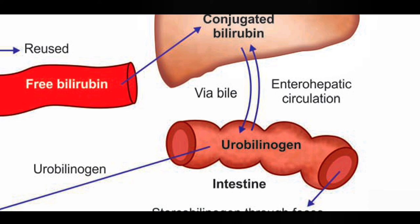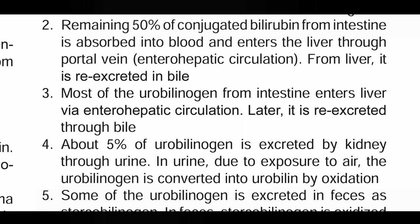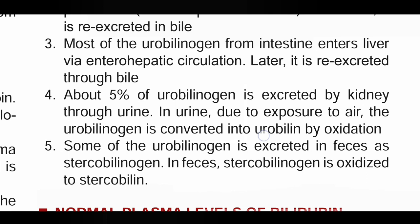The remaining 50% of conjugated bilirubin from the intestine is absorbed into the blood and enters the liver through the portal vein — this is the enterohepatic circulation. From the liver, it is re-excreted in the bile. Most of the urobilinogen from the intestine also enters the liver via enterohepatic circulation and is re-excreted through bile.